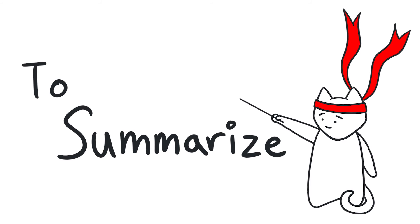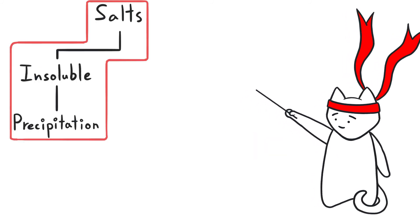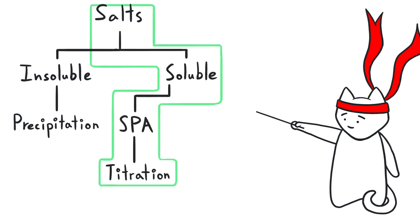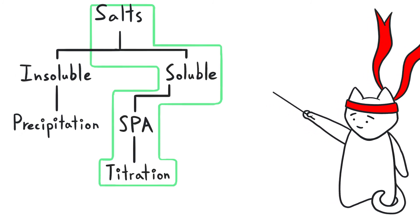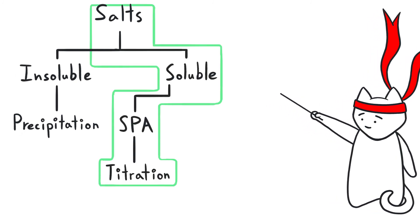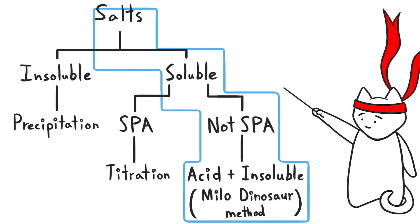To summarize there are three methods of preparing salts: precipitation for the insoluble salts, titration for the soluble and SPA salts, and for those that are soluble but not SPA we will use the acid plus insoluble method which we nicknamed the Milo dinosaur method.